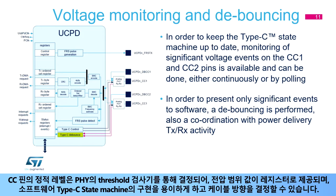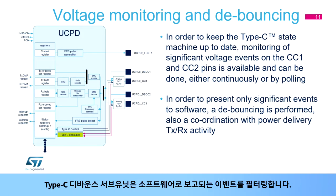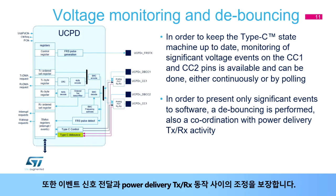The static level on the CC pins is determined via threshold detectors in the PHY to give a voltage range value in registers, facilitating the Type-C state machine implementation in software and also allowing cable orientation to be determined. The Type-C debounce subunit filters events to be reported to software, and is also in charge of ensuring coordination between event signaling and power delivery TX and RX activity.